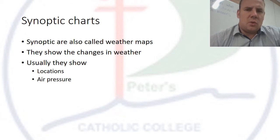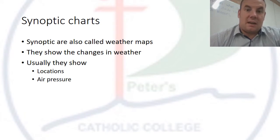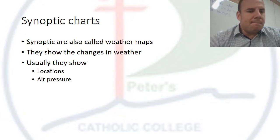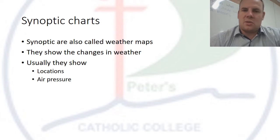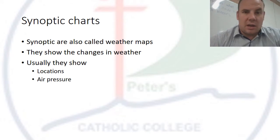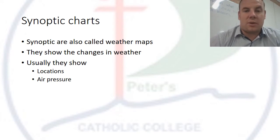Synoptic charts are the ones we see on the news every single day. They show changes in weather — weather being the changes in the atmosphere that affect us immediately. These changes happen by the second, by the minute, by the hour, every day of the year. They show locations of places, and we predict weather based on air pressure.